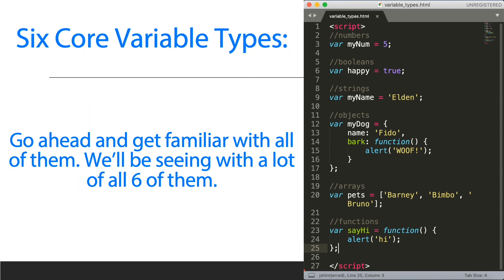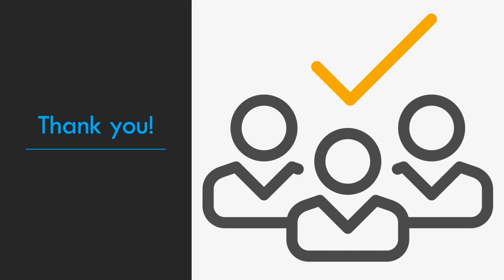So the six core variable types — we have covered all of them: numbers, booleans, strings, objects, arrays, and functions. Arrays provide a very good interface for storing lists of things, and functions provide ways of creating functionality. Go ahead and get familiar with all of them — we will be seeing a lot of all six of them. Thank you.